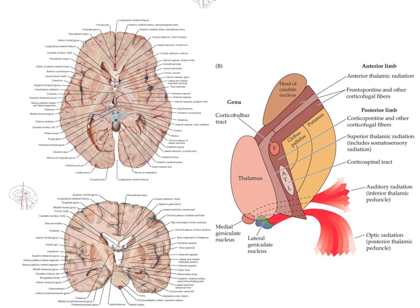In a coronal section it's easy to identify the internal capsule because we can see that it is sandwiched between the triangular lentiform nucleus laterally and the oval thalamus medially. So that's its appearance on a coronal section.